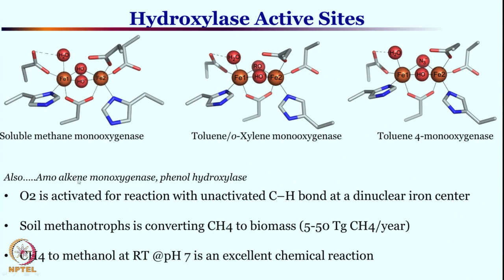There are also alkene monooxygenases which can convert an olefin into an epoxide, and phenol hydroxylases which can convert phenol into catechol. All of them have a di-iron active site, and their active sites are quite similar to each other. In all these cases oxygen is activated, and they are involved in these very difficult transformations.